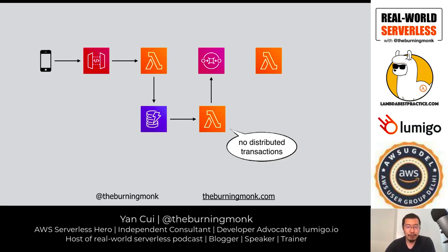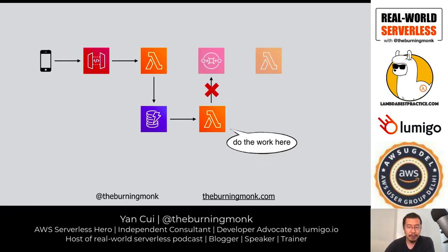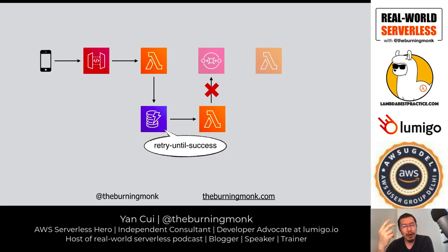That way you don't have a distributed transaction anymore — everything is sequentialized. One interesting characteristic of stream event sources — both DynamoDB Streams and Kinesis — is the retry-until-success behavior. If a downstream system you depend on has an outage and your function errors, DynamoDB Streams will keep calling your function again with the same batch, over and over, until you either process it successfully or the data expires from the stream.